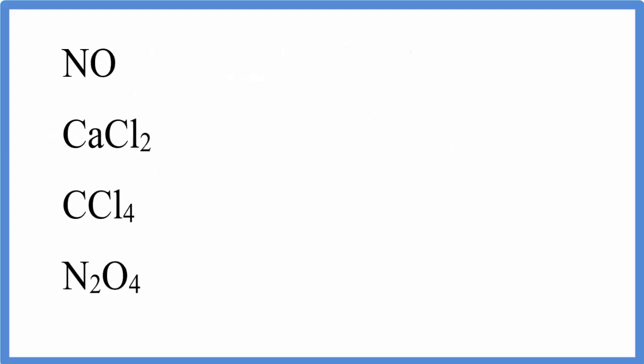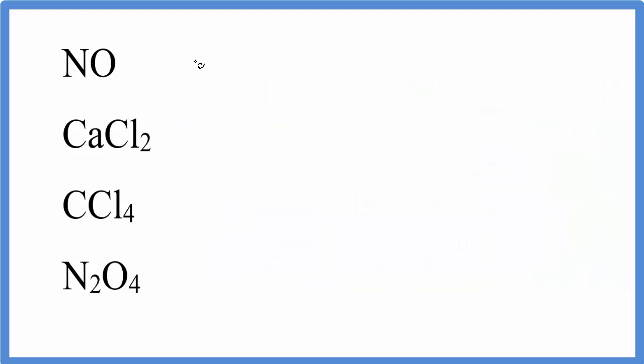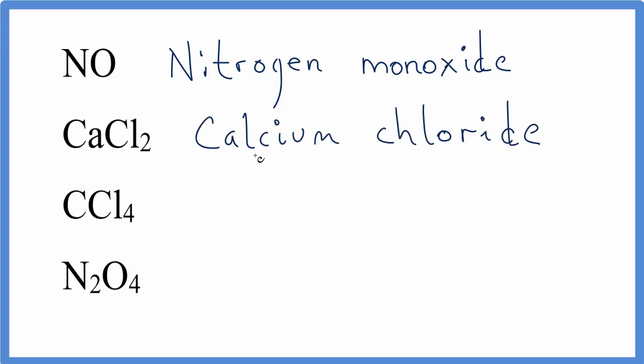So pause and write the name for each one of these formulas. Note that I included an ionic compound, a metal and a nonmetal, so be careful. For NO, we have nitrogen monoxide. For CaCl2, Ca, that's a metal. Chlorine's a nonmetal. So we can't use the rules for naming molecular compounds. We need the rules for ionic compounds. It turns out for CaCl2, we would call it calcium chloride. We don't need to write a di in front of the chlorine, because we know the charges on calcium and on chlorine, and we can figure out the formula just from the name.